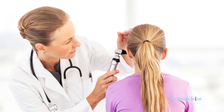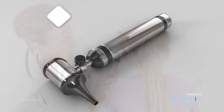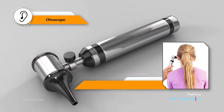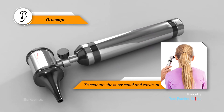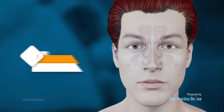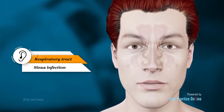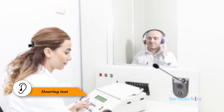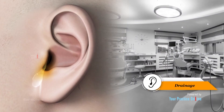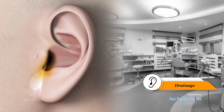Your doctor will review your symptoms and perform a physical examination. An instrument called an otoscope is inserted into the ear canal to evaluate the outer canal and eardrum. Your doctor will look for signs of respiratory tract or sinus infection. A hearing test may also be recommended. Drainage from the ear may be obtained and sent to be evaluated in a laboratory.